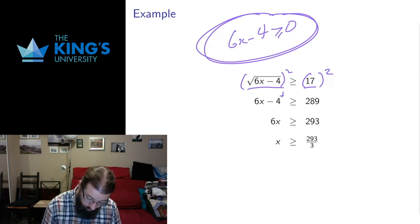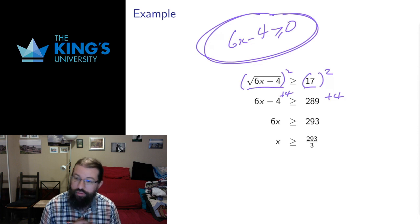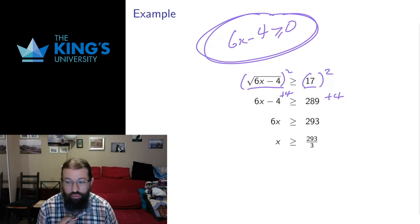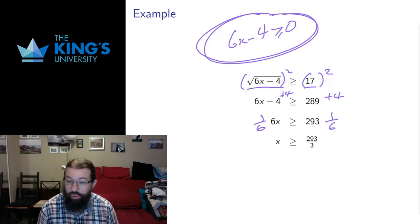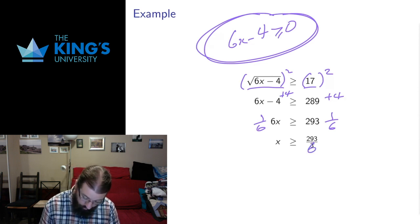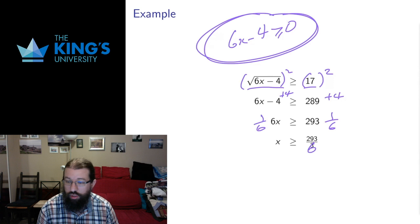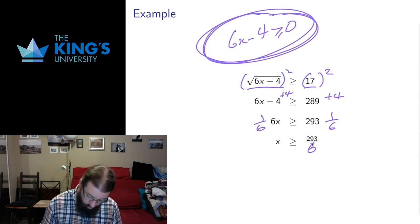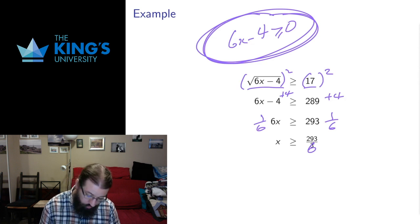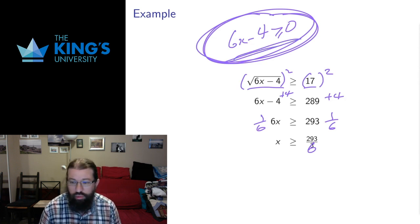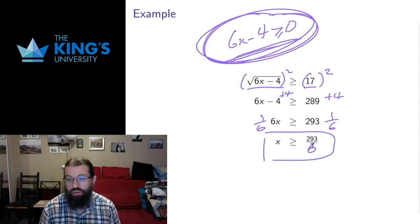Then I can add 4 to both sides — that preserves the inequality and cancels the 4 on the left. 289 plus 4 is 293. I can divide by 6 on both sides; dividing by a positive number preserves the inequality, giving me x greater than or equal to 293/6. Numbers that are at least 293/6 are nearly 30 and larger, so multiplying by 6 and subtracting 4 will always satisfy the original domain assumption. I conclude that x ≥ 293/6 is the solution.